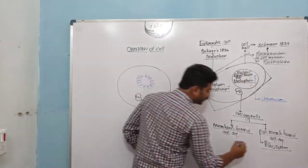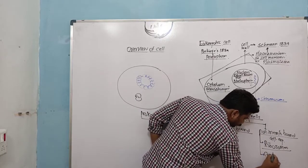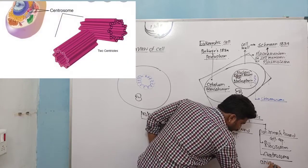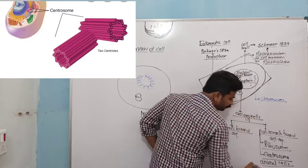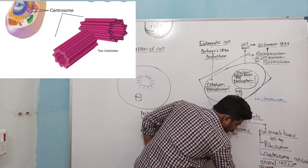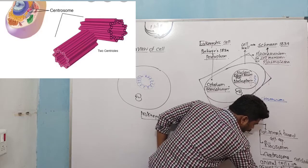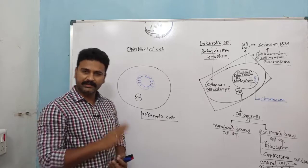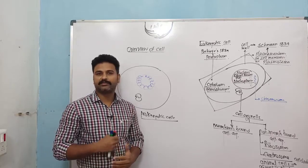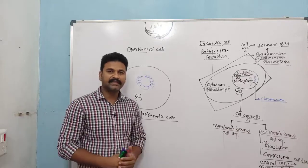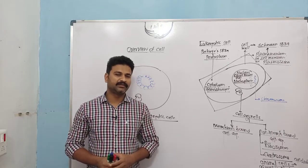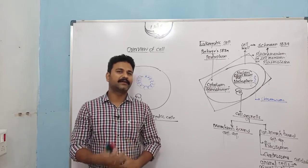The other non-membrane-bound cell organelle is the centrosome. The centrosome is only present in animal cells and is helpful for cell division. It is absent in plant cells. Because of this, animal cell division is described as amphiaster and plant cell division as anastral.